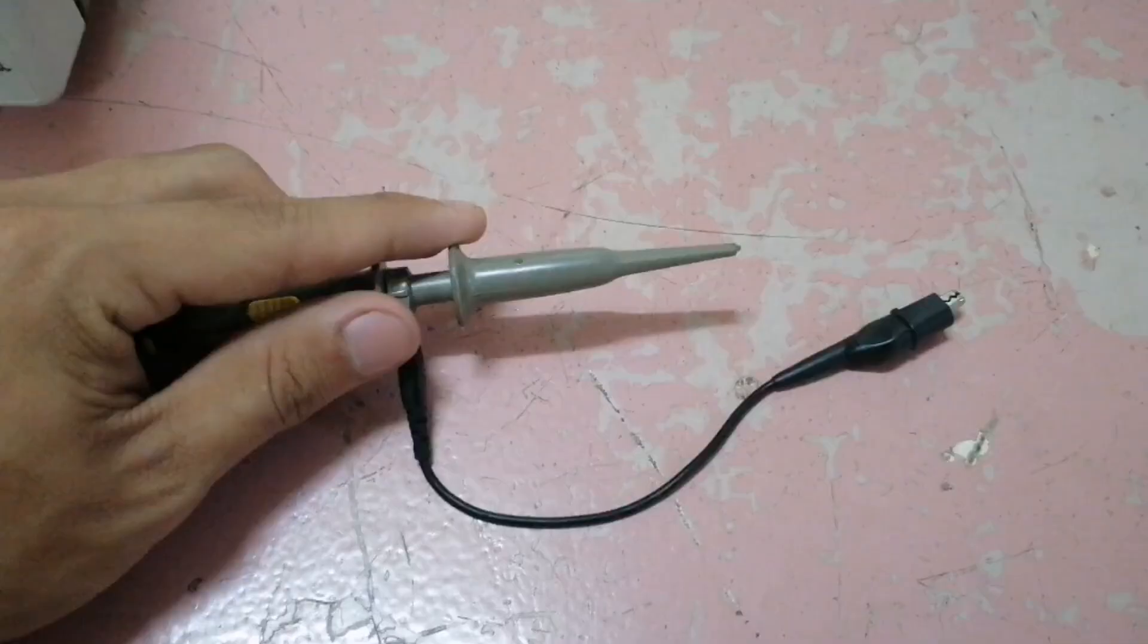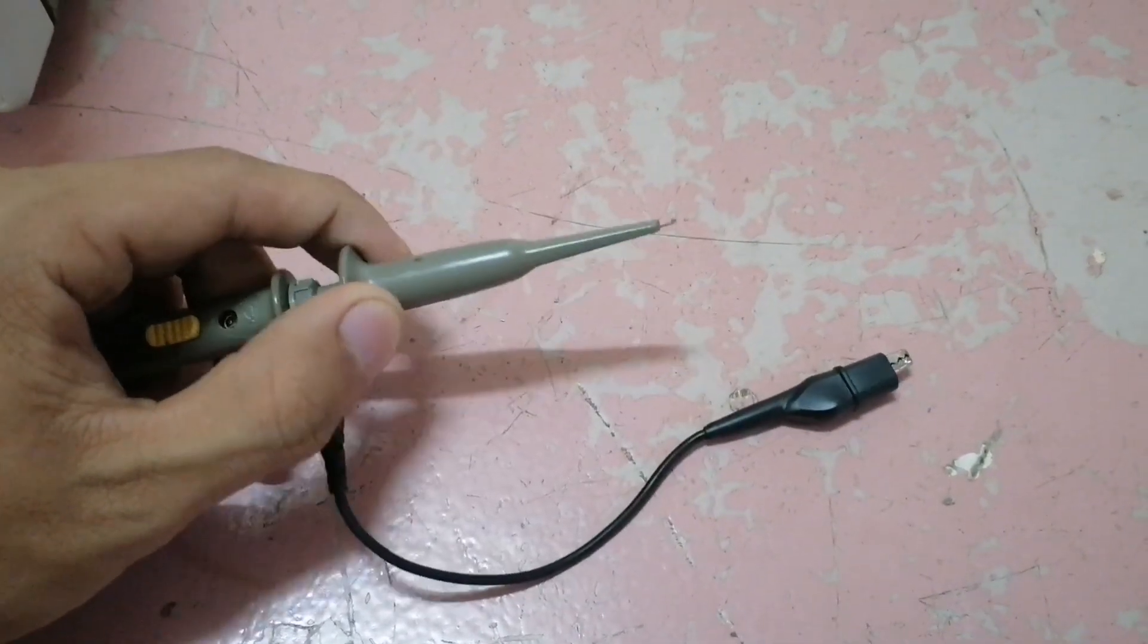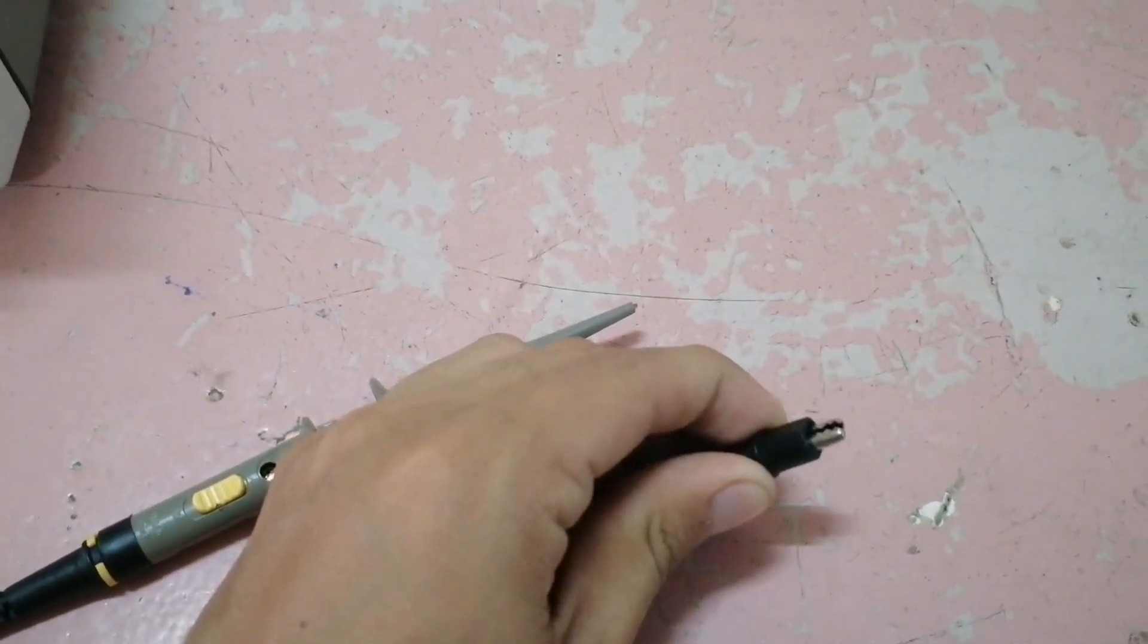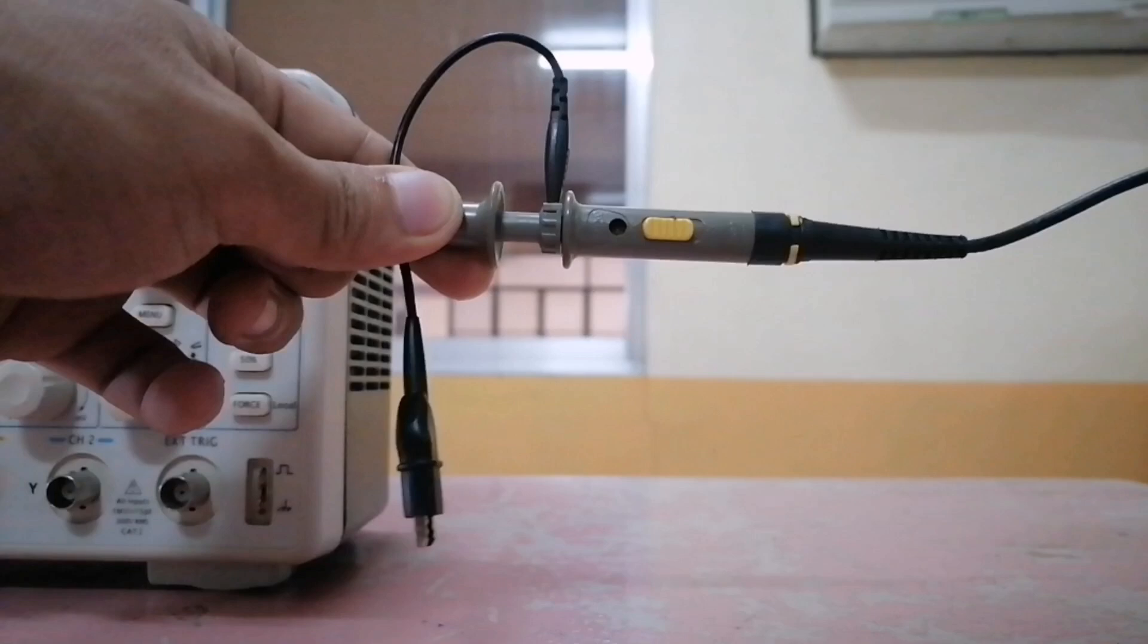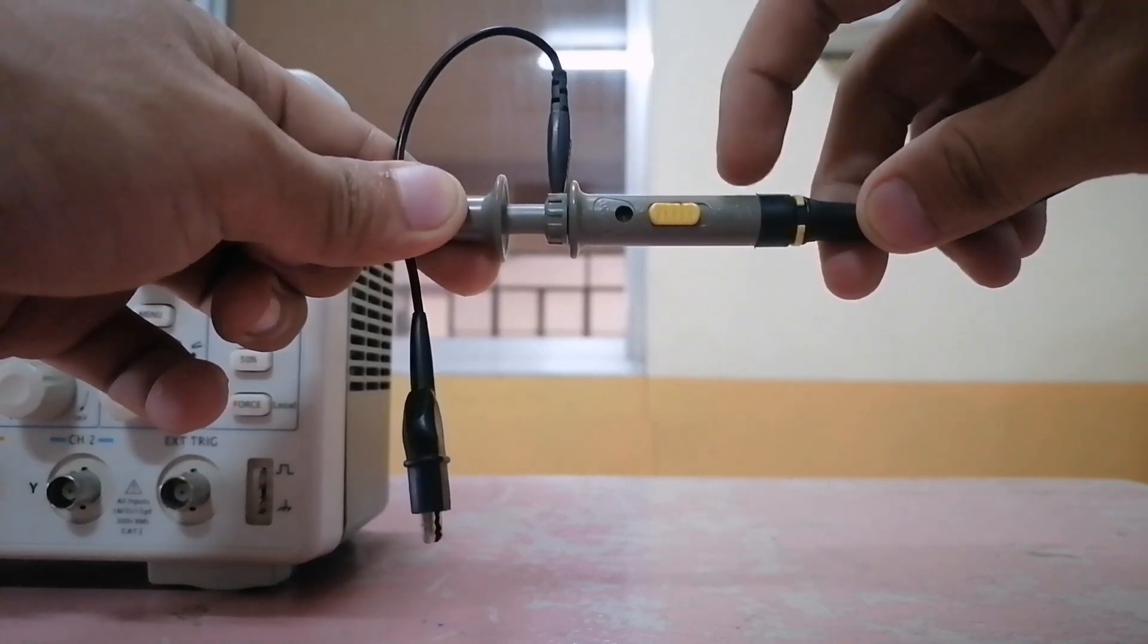Let's take a look at the parts of our probe. It consists of retractable input tip and the ground lead. In the center, we have the attenuation switch, which can be switched from 1x, which is on the top, and 10x on the bottom.